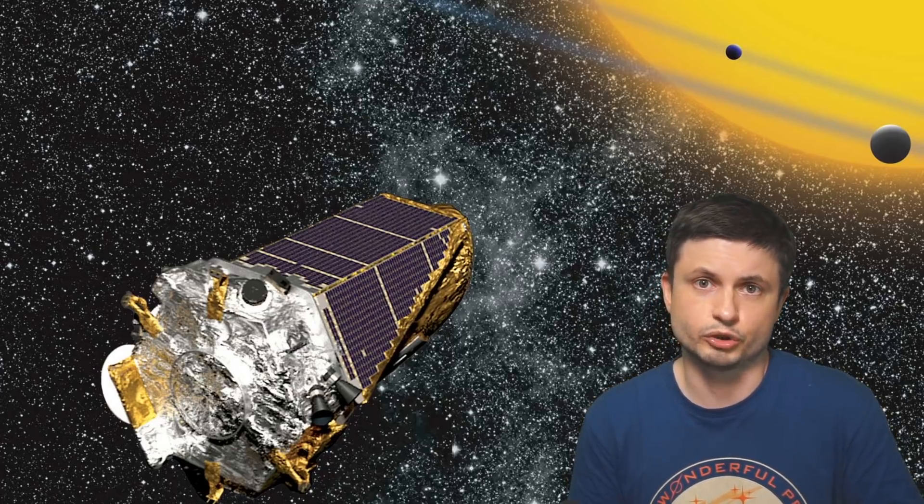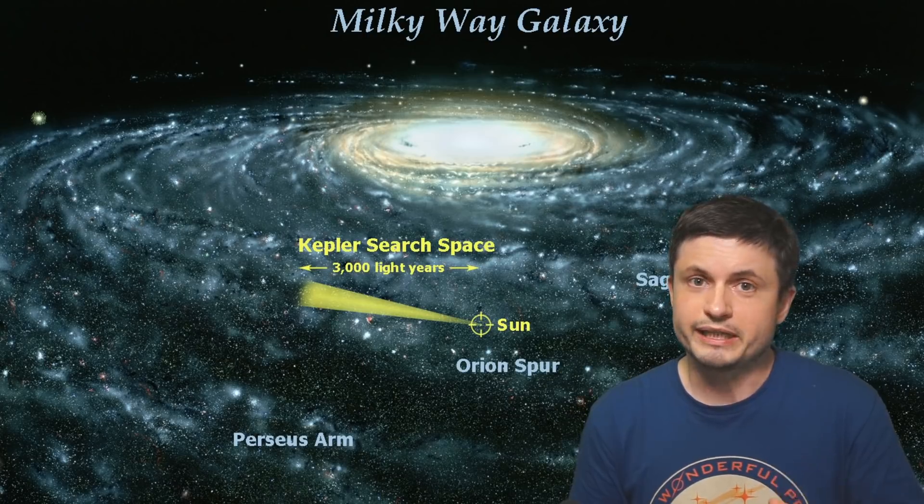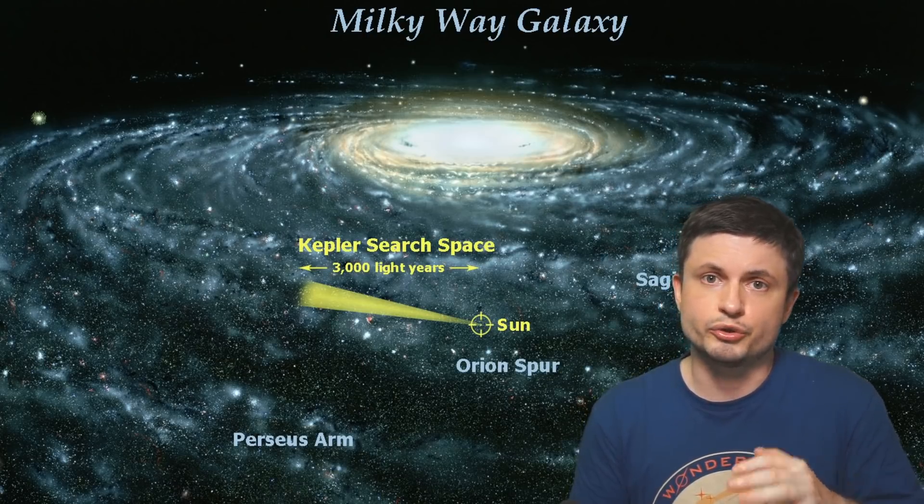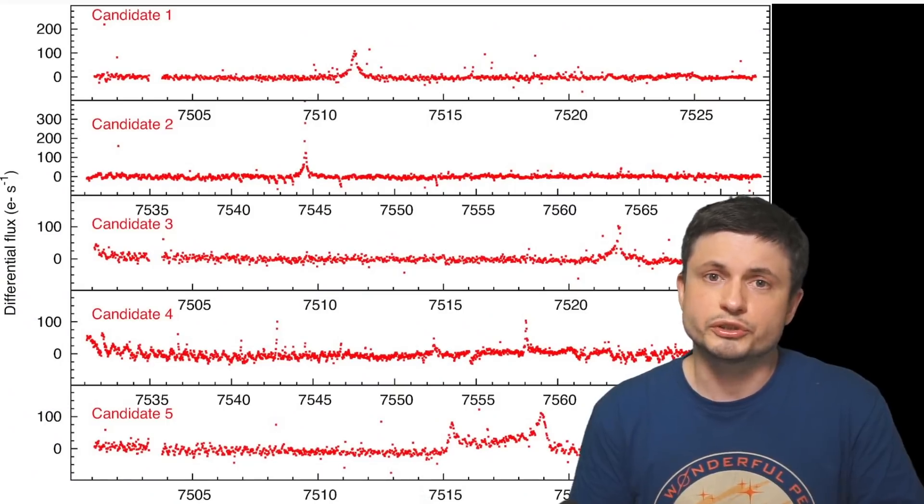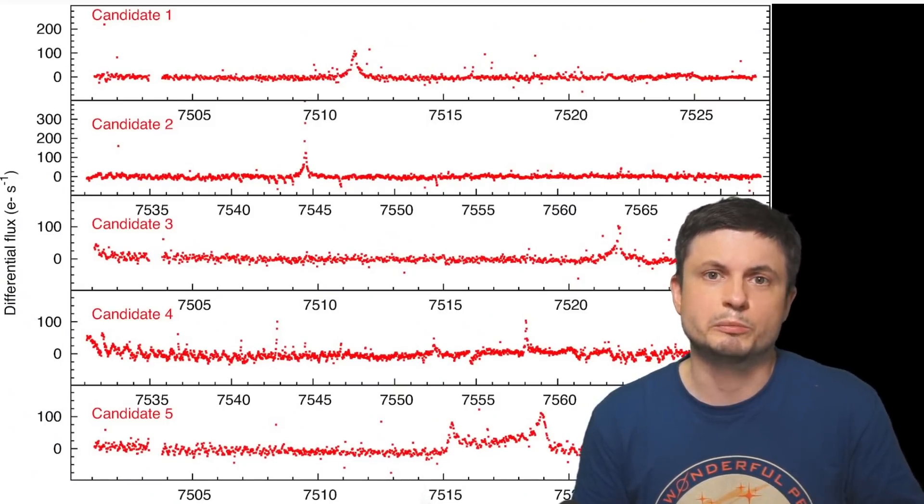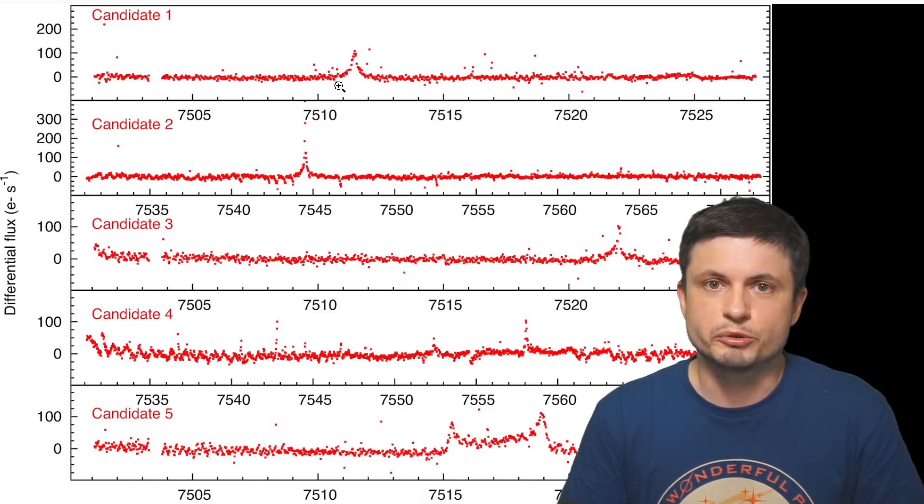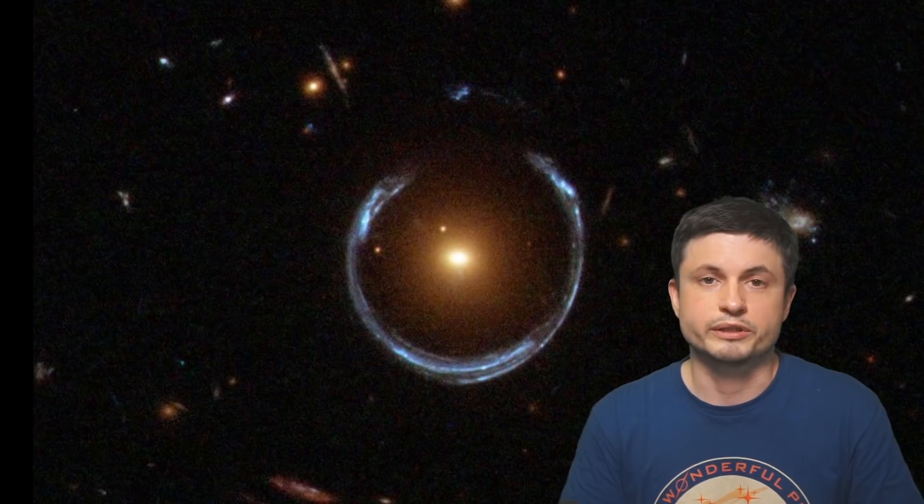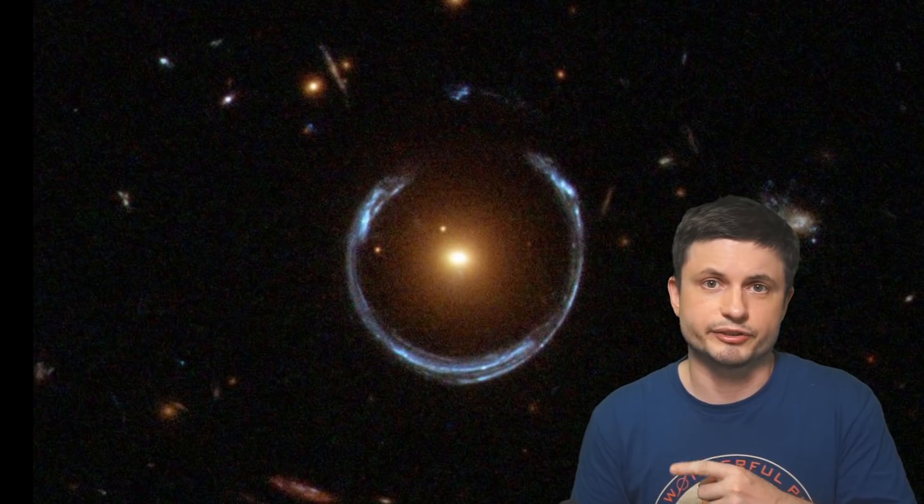But I guess the cooler part of this particular study is how they managed to use the old data from a telescope that no longer even operates to find something that it was never meant to find to begin with. They managed to use the data and mathematical analysis to almost look for the opposite of what the telescope was built to do. Normally it's supposed to find dips, but in this case they managed to find these brightening events that can only be caused, or at least can generally be caused by something like this.